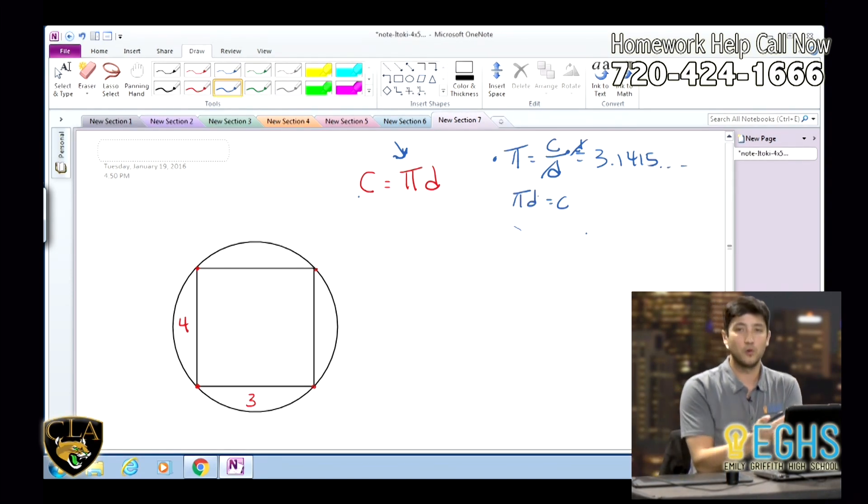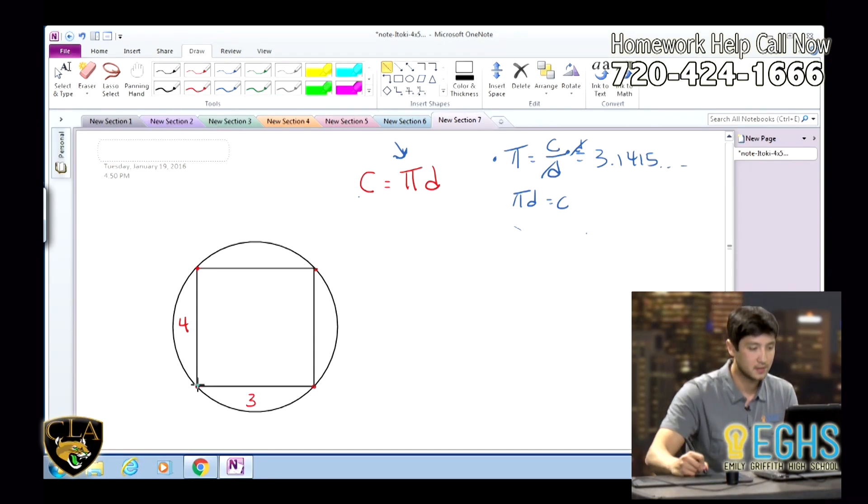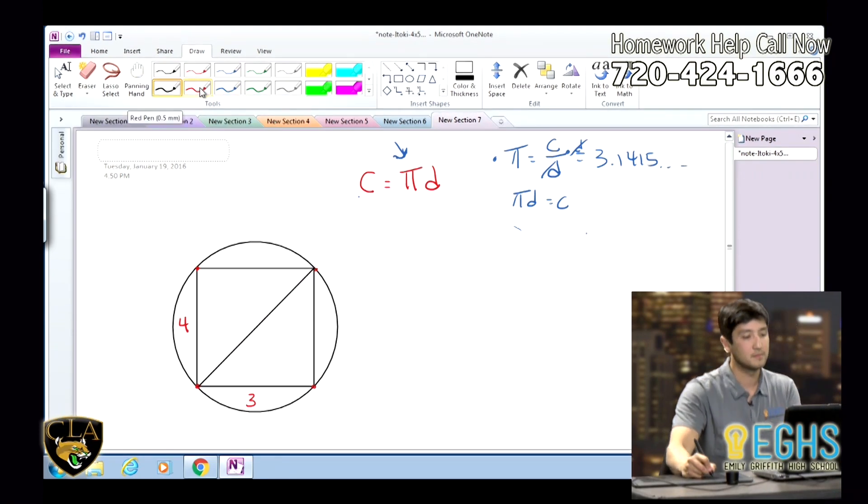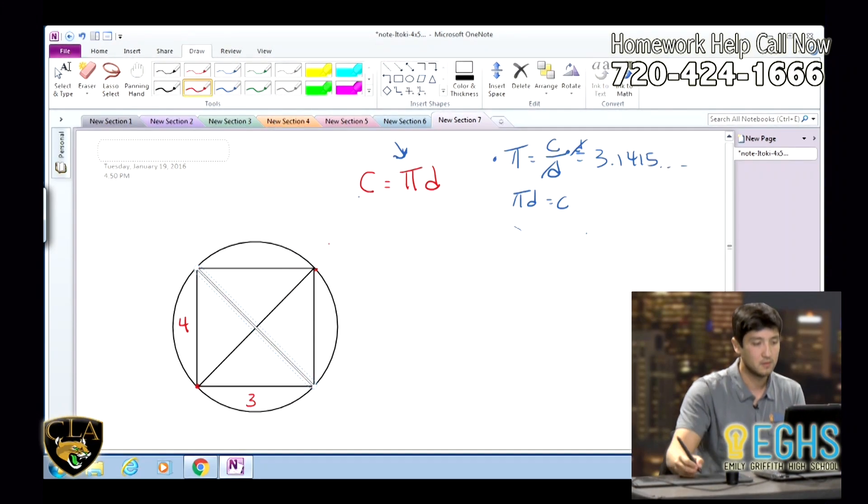So, when we're looking at this problem, we actually need to know the circumference, or sorry, the diameter of this circle. But right now, all we know about is the measurements, the dimensions of this inscribed rectangle. Well, the other thing that you should know about this is that when we have a rectangle inscribed, the diameter or the diagonals of this go straight through the center of the circle, right?